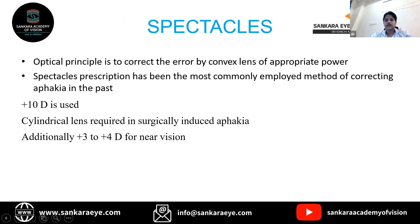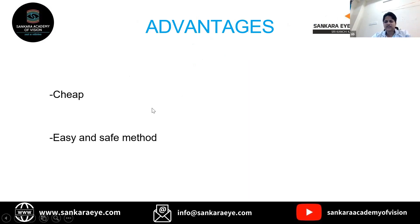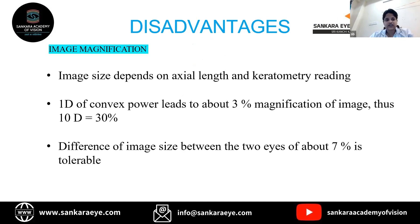Spectacles: the optical principle is to correct the error with a convex lens of appropriate power. The spectacle prescription uses plus 10 diopter lenses, with a cylinder also given. A plus 3 to plus 4 diopter addition is given for near vision. Advantages are that it is a cheap, easy, and safe method. A disadvantage is image magnification — for one diopter of convex power there will be 3% magnification, so a 10 diopter convex lens gives about 30% magnification.